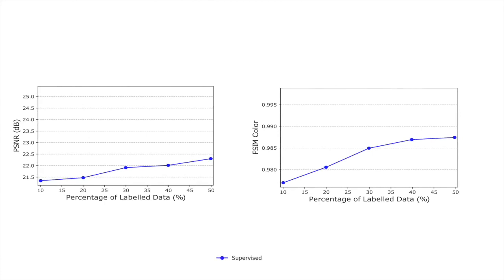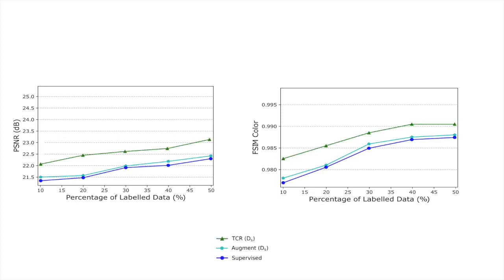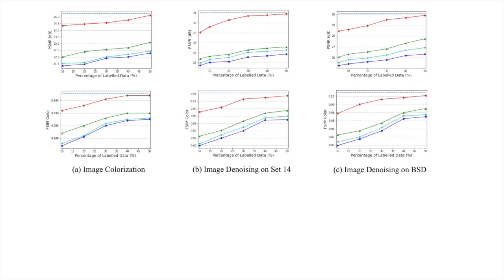Here, we show the results for image colorization for the baseline model, incrementing the percentage of label data used for training. We observe a minor improvement in performance by adding an additional image augmentation loss term. On adding the transformation consistency regularization loss term over the supervised data, we achieve a greater performance boost than image augmentation. Finally, when the transformation consistency regularization term is added over the entire dataset — i.e., supervised plus unsupervised data — we observe a substantial increase in performance. We observe consistent trends for different image-to-image translation applications, namely colorization, image denoising, and image super-resolution.